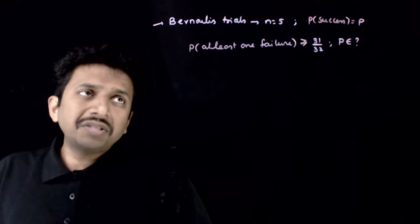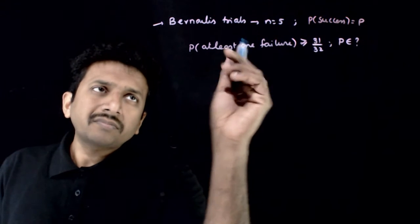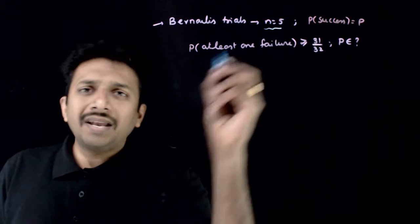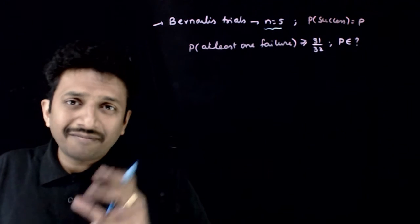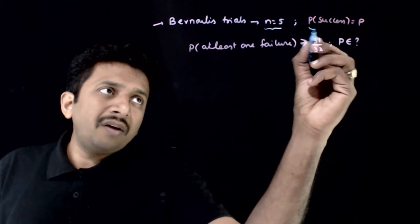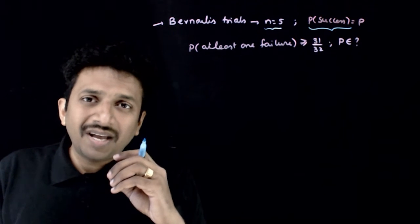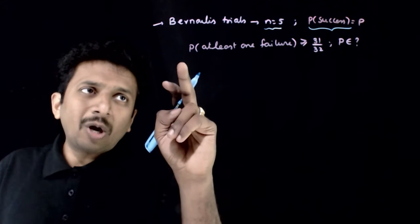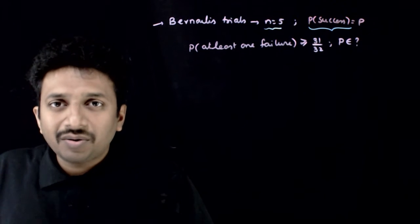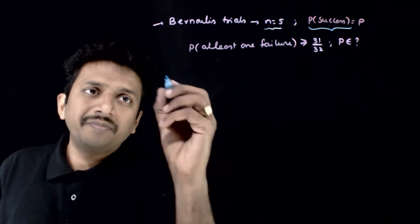Welcome students. In this question, you have given that you are dealing with binomial trials where n is equal to 5. You have 5 binomial trials where the probability of success in each trial is p, and the probability that you have at least one failure is greater than or equal to 31 by 32. So what is the value of p?